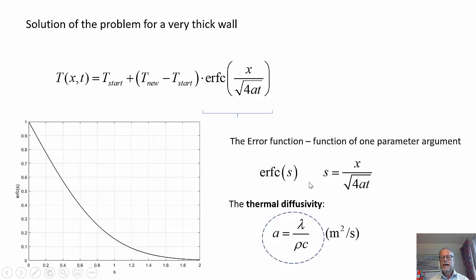We see that the argument here inside the function, s is equal to the depth in the solid divided by square root of 4at. And a is the thermal diffusivity of the material in the solid and is equal to λ divided by ρc.